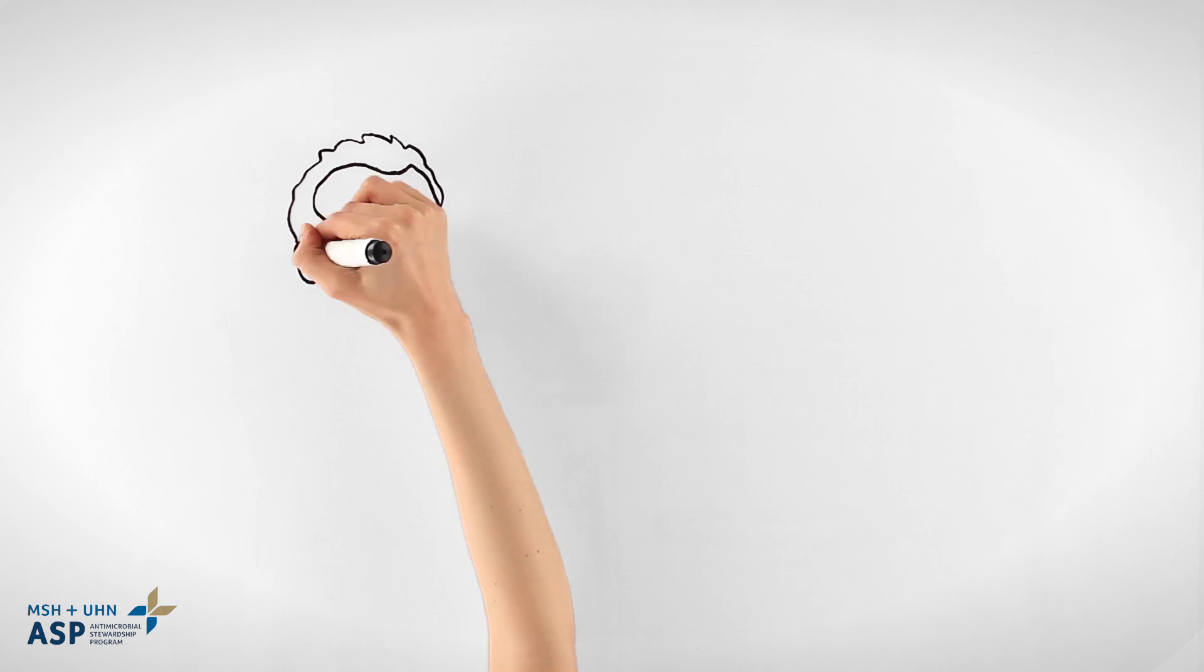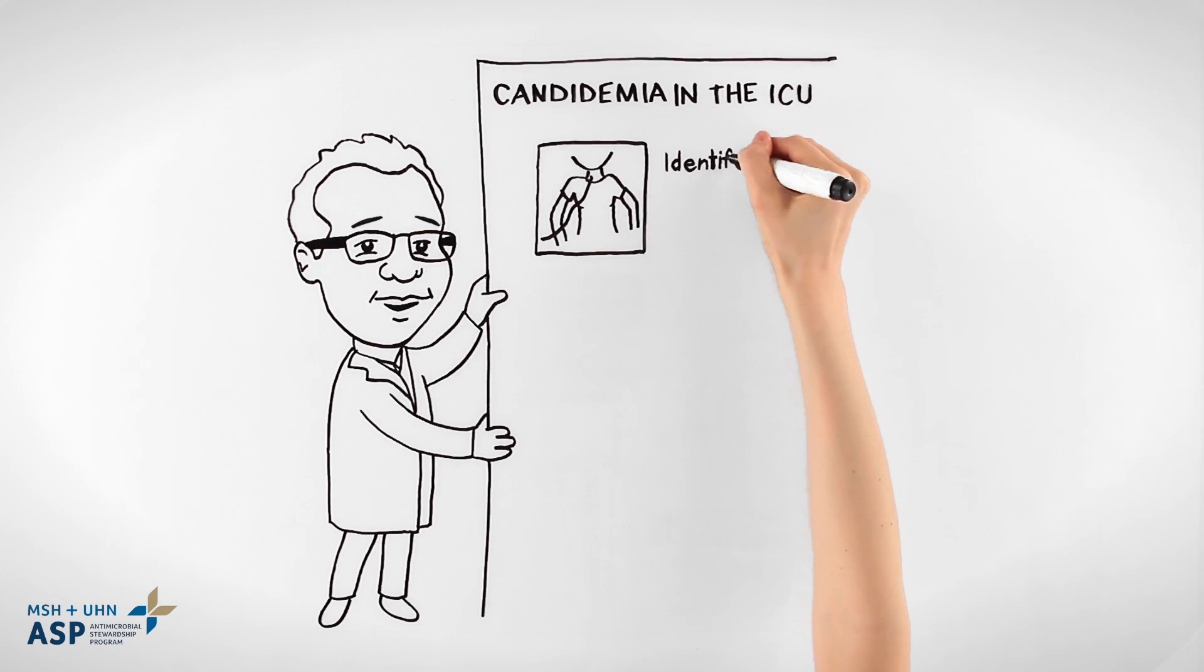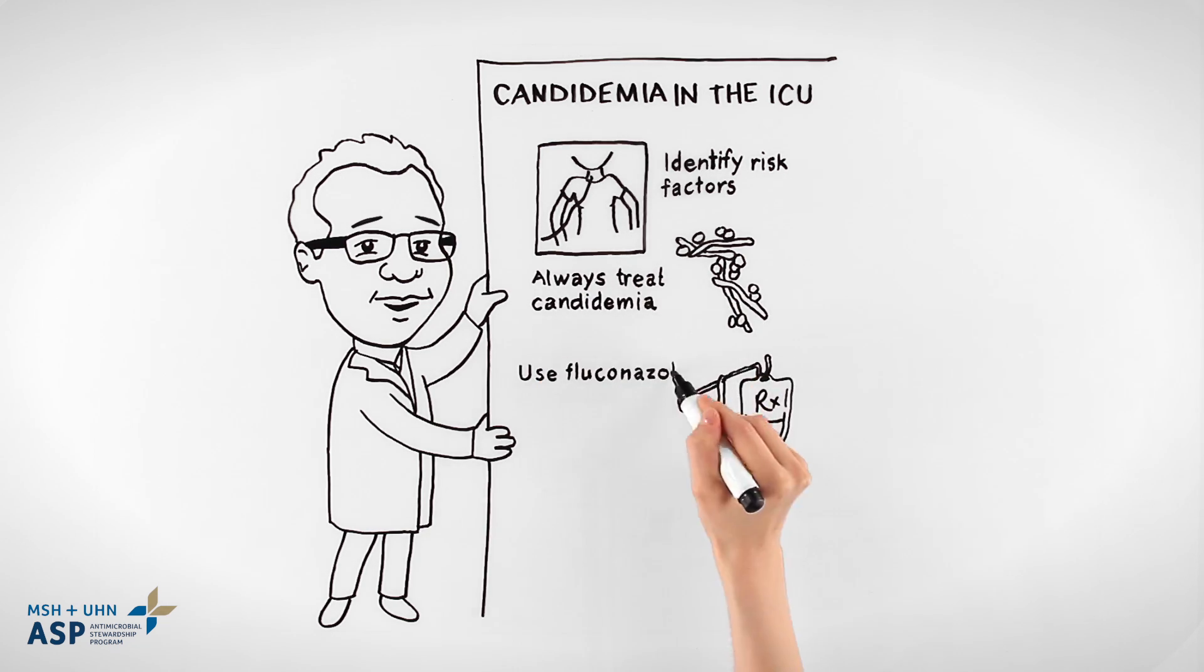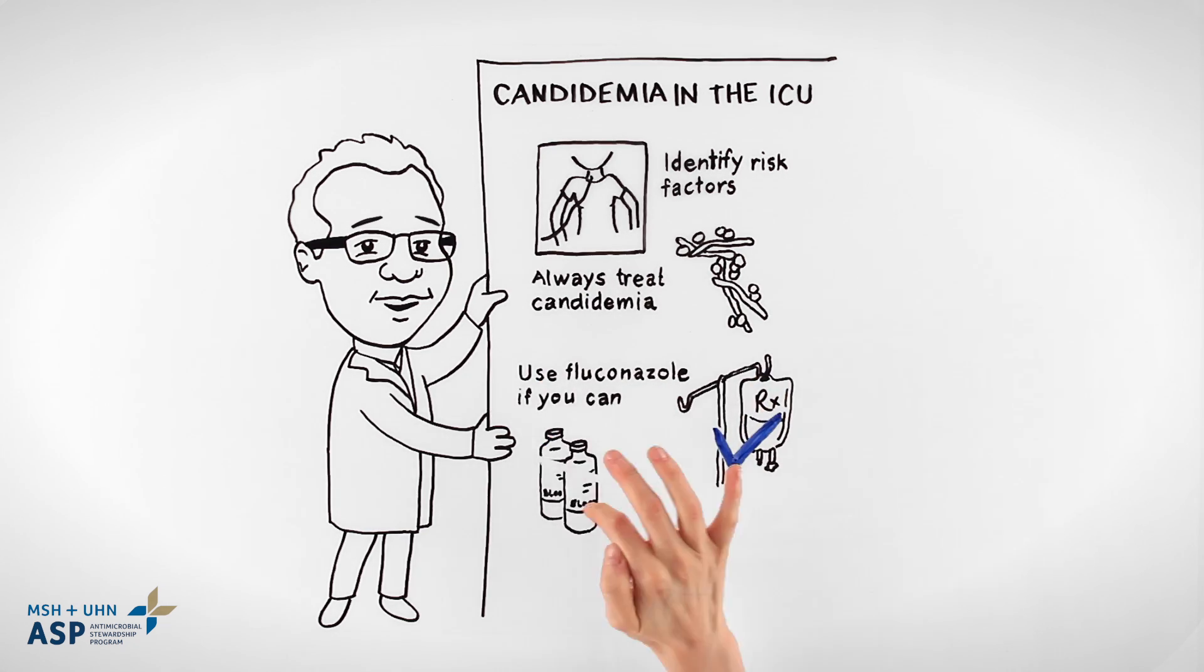Key messages: identify candidemia risk factors, always treat candida in the blood, use fluconazole if you can, and treat most patients for 14 days from negative cultures.